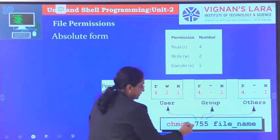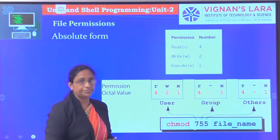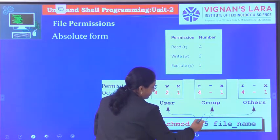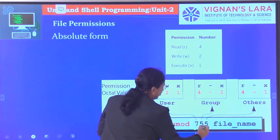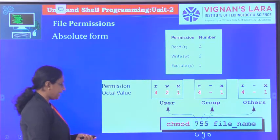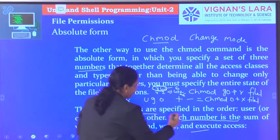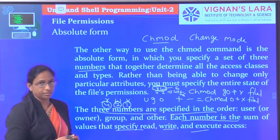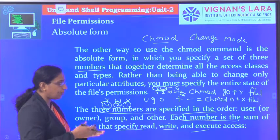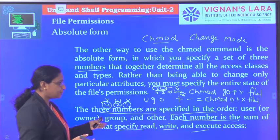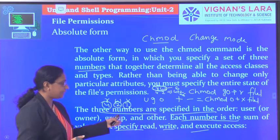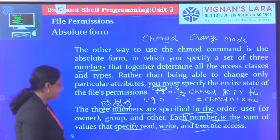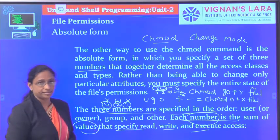So here, one number is for the user, the second number is for the group, and the third number is for others. The three numbers must be specified in order: user first, group second, and others third. You cannot exchange that order. Each number is the sum of values for read, write, and execute access.